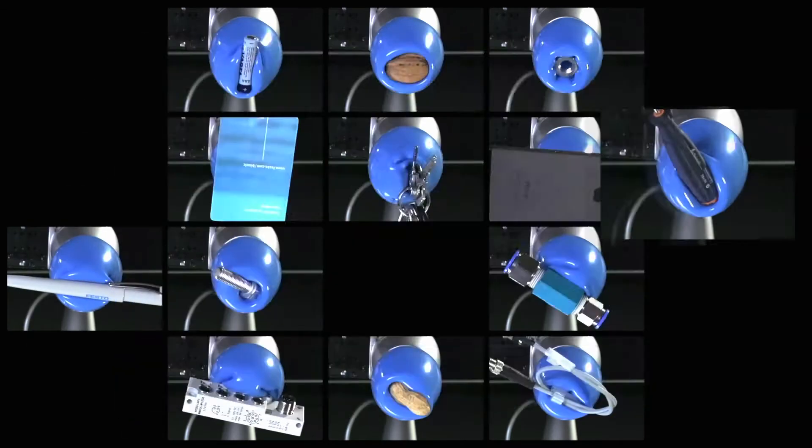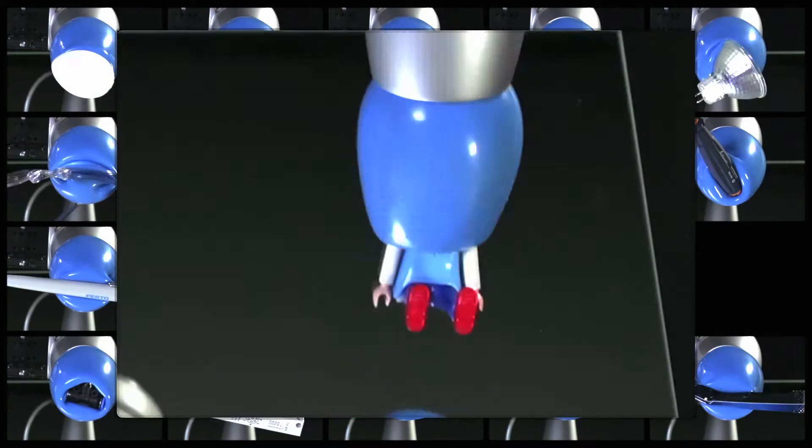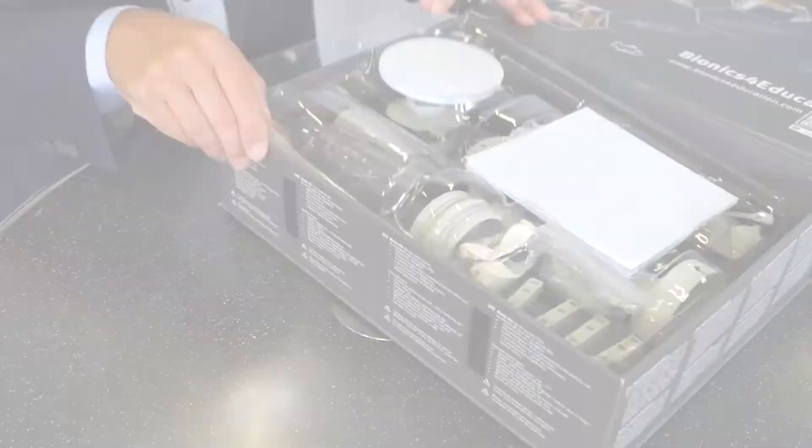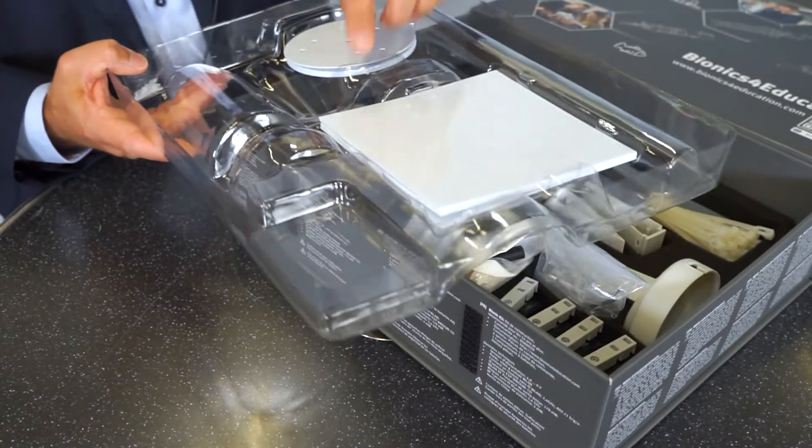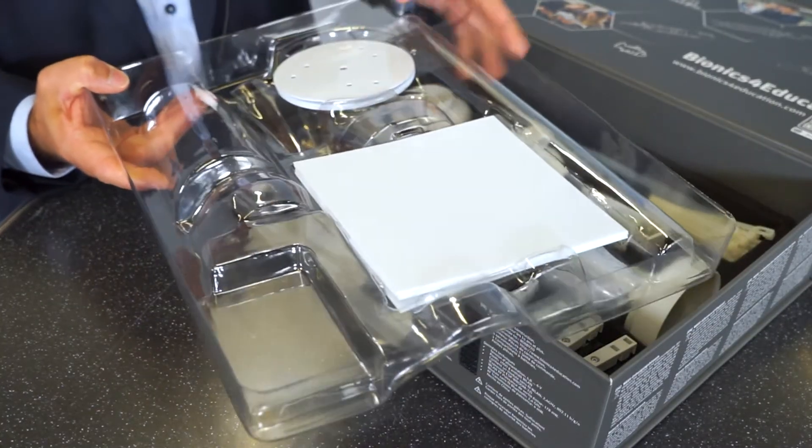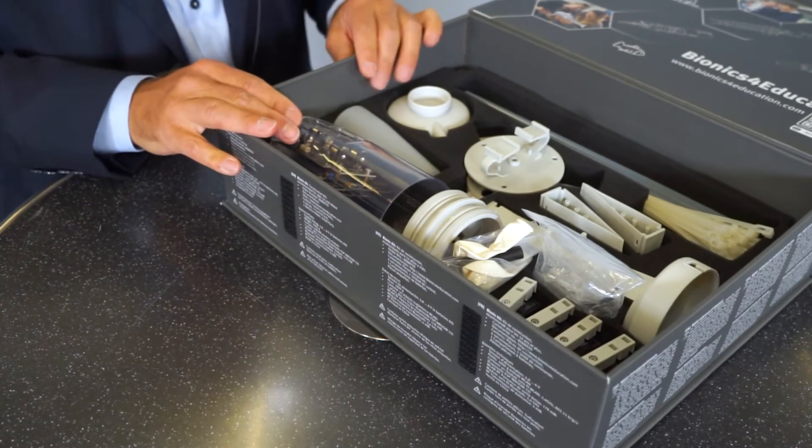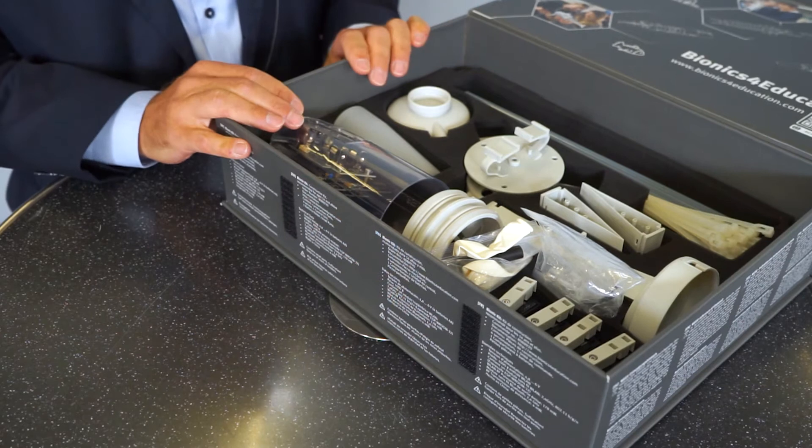So now it's time to build our own chameleon gripper. And for this we use the bionics kit. And now we will have a closer look inside. The first thing you see is a cover with some plastic sheets we don't need for the chameleon. And then you see all the different parts you need for the three different bio-inspired robots.